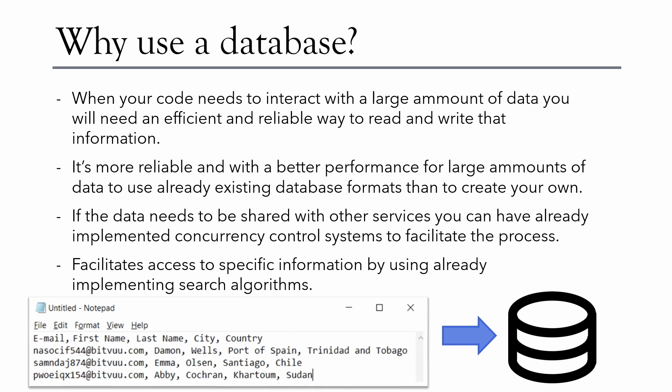Of course, you could create your own database implementation, but there are so many alternatives out there that you are going to save time by using one of these. One thing that is going to help you is concurrency control — it means that if multiple processes need to access or write on the same data, they are not going to write one on top of the other, avoiding conflicts. Also, by using a well-established database, you are going to have a faster search algorithm than, for example, just running a search on a text file.